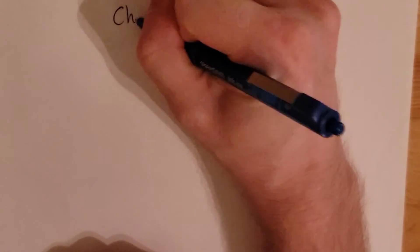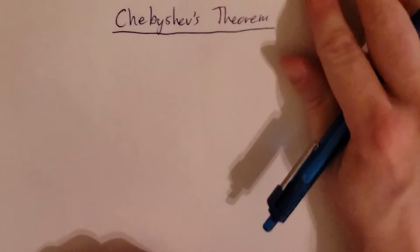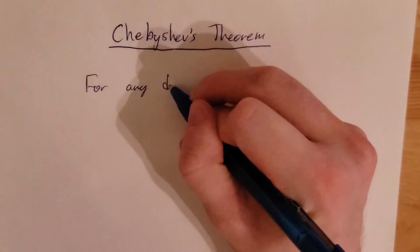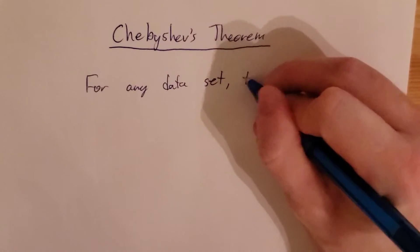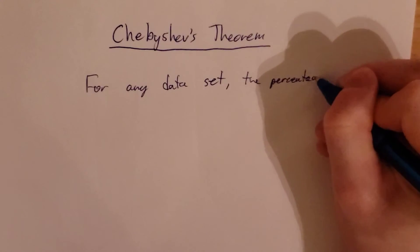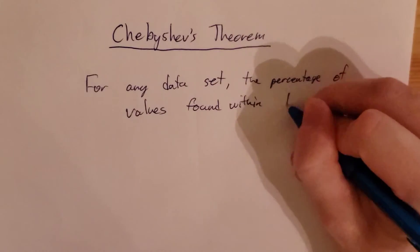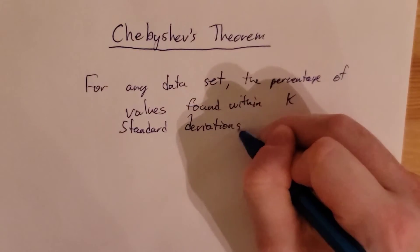What if we don't have a normally distributed set of data? Then we have something called Chebyshev's theorem. For any data set — this includes normal distributions, but in particular for non-normal distributions — the percentage of values found within k standard deviations of the mean...